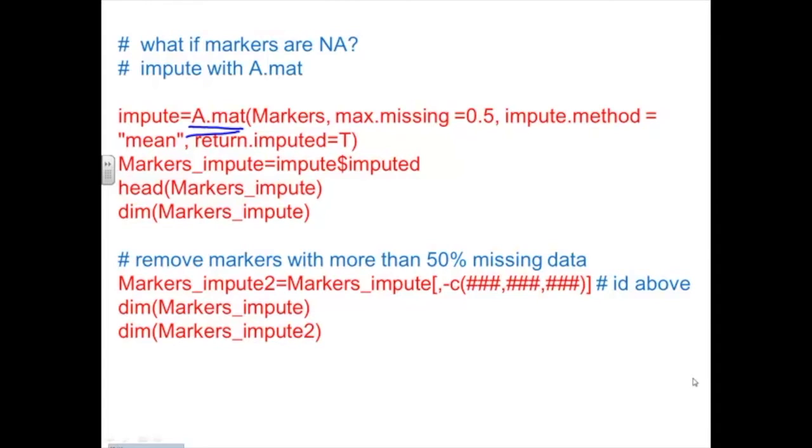And so we're saying here the max missing is 0.5. I would actually, I wouldn't tolerate that much missing data. I'd throw out those markers. I'd probably throw out markers that had more than 10% missing data. But this will return a vector of essentially names that you can then use this command to drop from the data set.